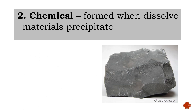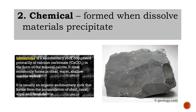Chemical sedimentary rocks form when dissolved materials precipitate from a solution. A sample is limestone — a sedimentary rock composed primarily of calcium carbonate in the form of the mineral calcite. It most commonly forms in clear, warm, shallow marine water. It is usually an organic sedimentary rock that forms from the accumulation of shell, coral, algal, and fecal debris.